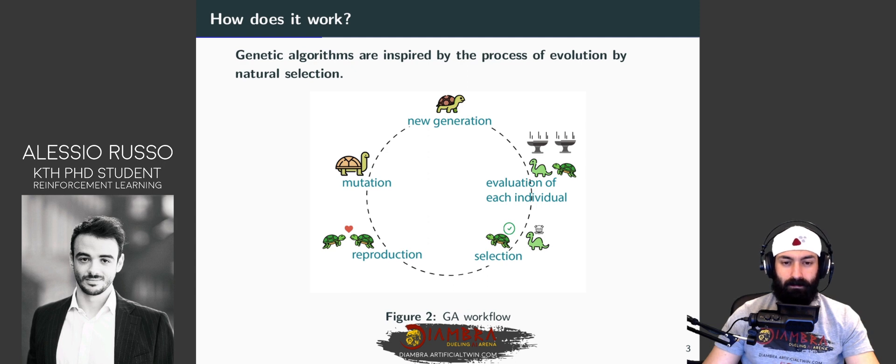In reinforcement learning, we do exploration using epsilon-greedy strategy or UCB strategies or many other strategies. The idea is the same here. We want to perform mutation in order to explore. We get a new population and we keep going. That's the idea behind.